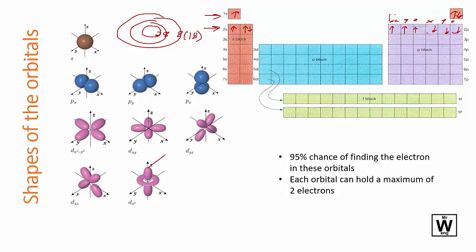And so there's three of those and the d there's 10 and the f there's 14. So the pictures of them look like this here. These are the s's.